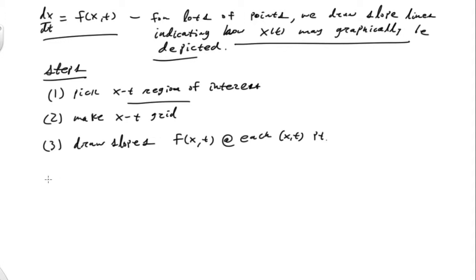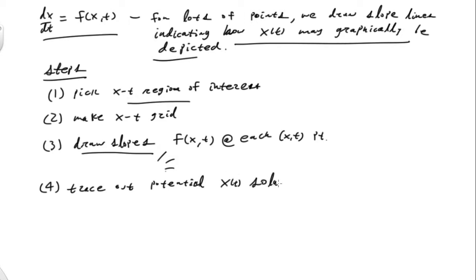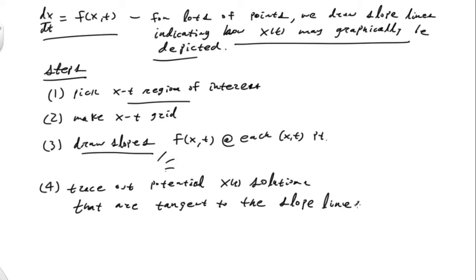At each point we draw these little slope lines — small lines indicating the slope. Together, this whole picture is what we call a slope field. And then what we can do is trace out potential x of t solutions that are tangent to the slope lines.